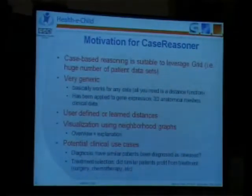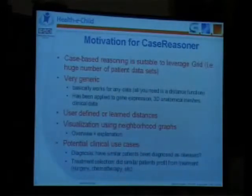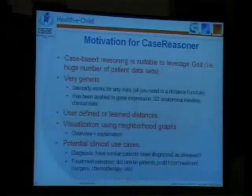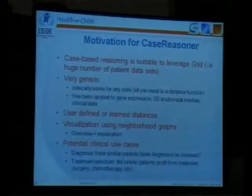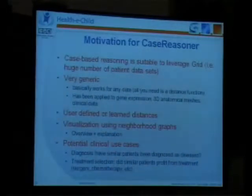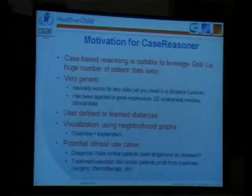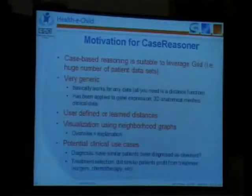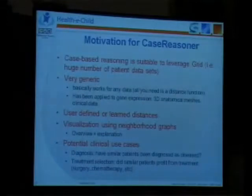Here we offer two possibilities. Either the clinician tells us: for me, ejection fraction is the most important thing — show me similar patients with regards to ejection fraction. Or we can say the system can learn something. If we have validated data, we just give the validated data to the system and the system does the clustering and classification for us. So we have both approaches.